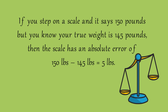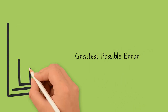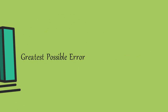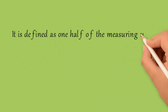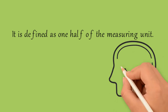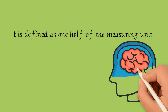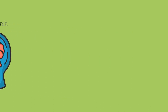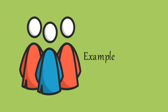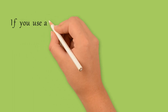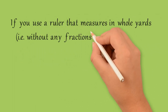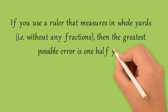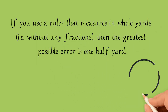Us ke baad aata hai greatest possible error. Aapko naam se hi pata chal raha hai — it is simply defined as one half of the measuring unit. For example, when we look at the greatest possible error: if you use a ruler that measures in whole yards — that is, without any fractions — then the greatest possible error is one half yard.